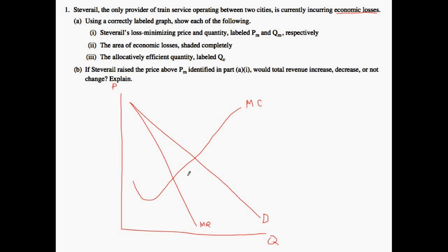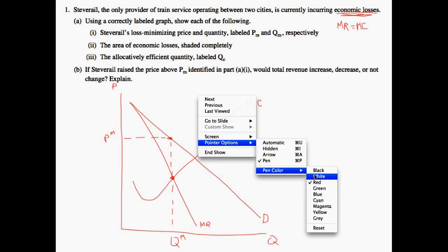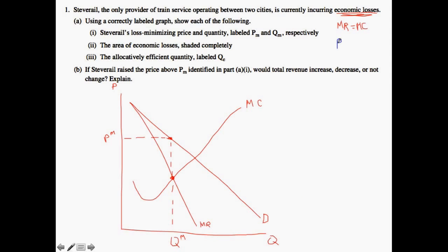Given that, the monopolist would set marginal revenue equal to marginal cost. So we know that we would be right here, and if we go all the way down we would get QM — that's where the monopolist sets their quantity because that's where marginal revenue equals marginal cost. Wherever that strikes the demand curve is where the monopolist sets their price, since they have market power. Now we need to consider the fact that the monopolist is taking economic losses.